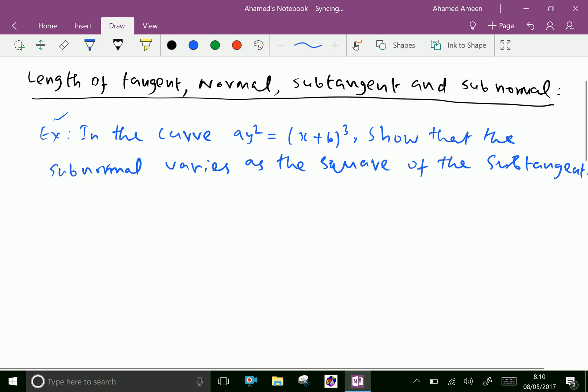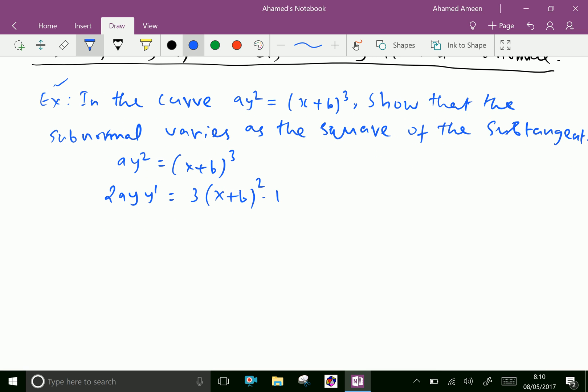Our curve is ay² = (x+b)³. Differentiating both sides with respect to x: 2ay·y' = 3(x+b)². Therefore, y' = 3(x+b)²/(2ay).